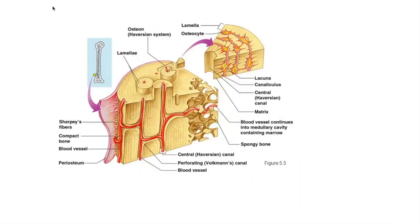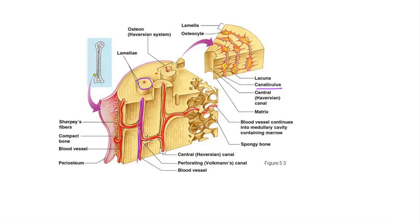Here's a similar diagram reiterating these points. Each tree trunk-like structure is an osteon composed of concentric lamellae. A blown-up image shows the stellate osteocytes with projections extending into canaliculi, the central Haversian canal in the middle, and the perforating or Volkmann's canals running horizontally. Note that each canal contains not just an artery but also a vein and a nerve. Spongy bone consisting of trabeculae is also visible.